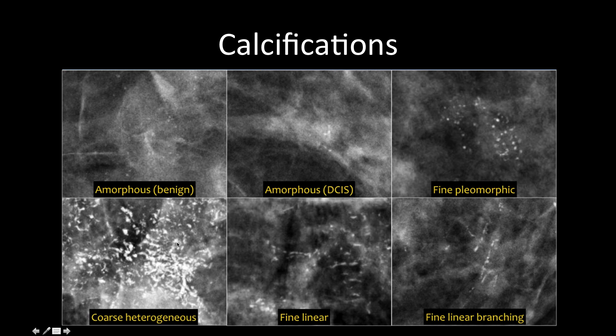When we talk about coarse heterogeneous calcifications — the one in the lower left-hand corner — if this is DCIS it is probably going to be low to intermediate grade, though some benign pathology can present similarly. Once we move to fine linear or fine pleomorphic calcifications, we are a lot more concerned about the possibility of cancer, specifically high-grade DCIS.